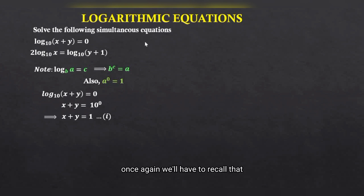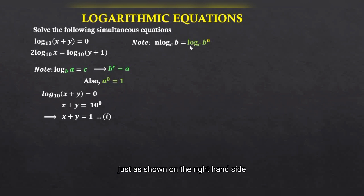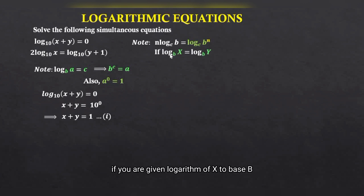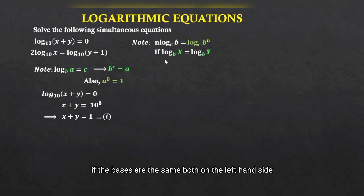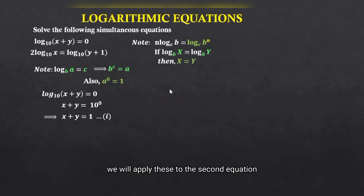For the second equation, we recall that n log b to base c can be expressed as logarithm of b raised to n, to base c — that is, n becomes the power of b. Also, if logarithm of x to base b equals logarithm of y to base b, meaning the bases are the same on both sides, then we can drop the logs and equate x to y.